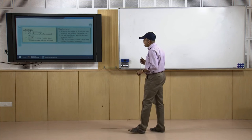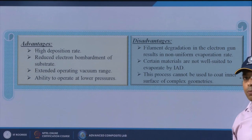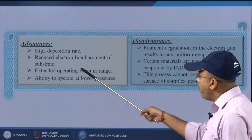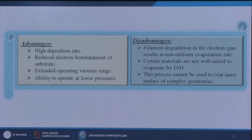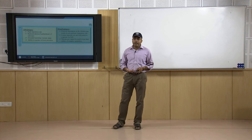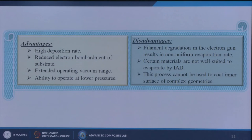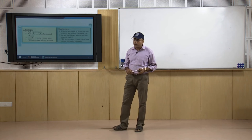The advantages of IAD include high deposition rate, reduced electron bombardment of the substrate so its shape and size are not affected, and extended operating vacuum range with the ability to operate at lower pressure. Disadvantages include filament degradation in the electron gun resulting in non-uniform evaporation rates, since the filament lifespan reduces over time. Certain materials are not well suited to evaporate by the IAD process, and it cannot be used to coat inner surfaces of complex geometries — only outer surfaces can be coated.